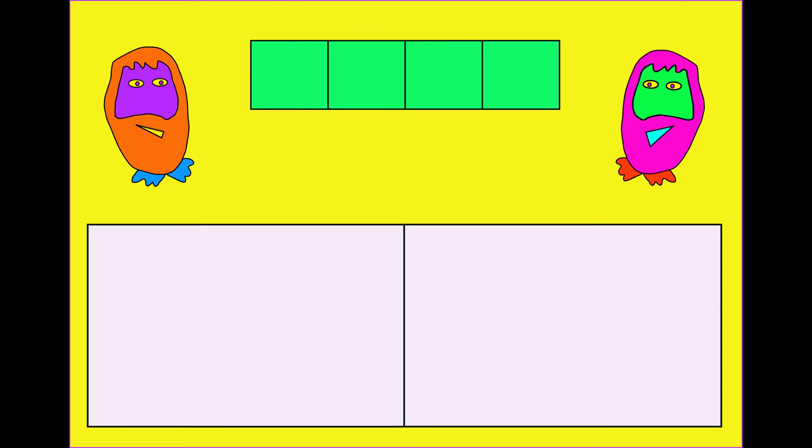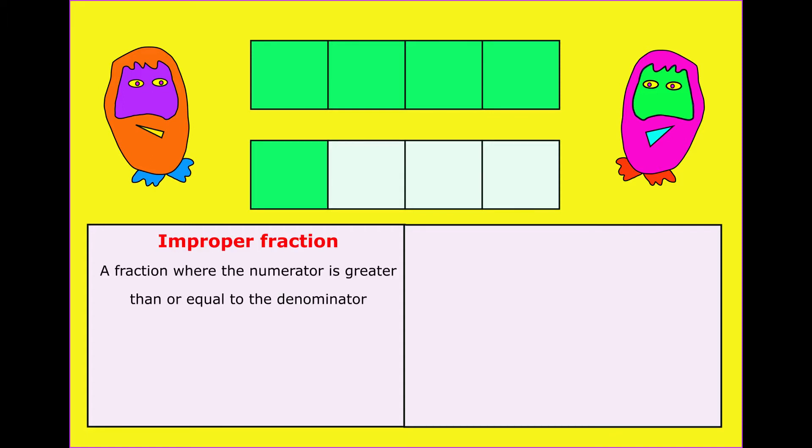What if I want more than four quarters? Well, I need to draw another whole and split that into quarters. Here we have five quarters. An improper fraction is a fraction where the numerator is greater than or equal to the denominator. Here is an improper fraction, five quarters. The numerator is bigger than the denominator.